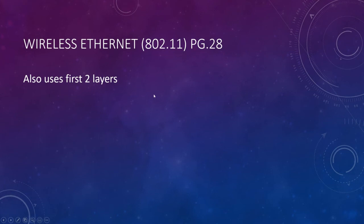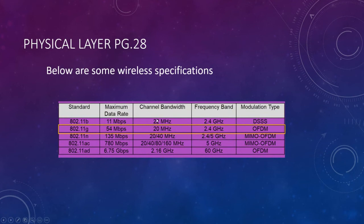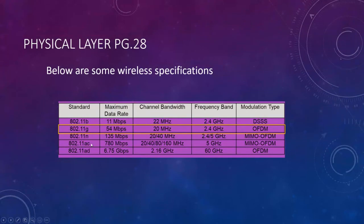Moving to wireless Ethernet: it also uses the first two OSI layers — physical and data link. Because it's still Ethernet, just one wired and one wireless, there are not a ton of differences. IEEE 802.11 is the wireless standard. Know that 802.3 is wired and 802.11 is wireless — the sub-designations like B, G, N, AC, AD are less critical.